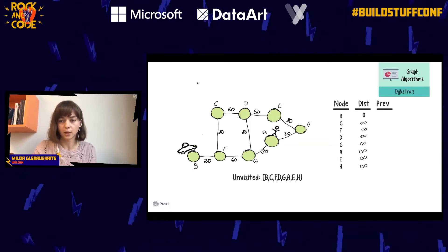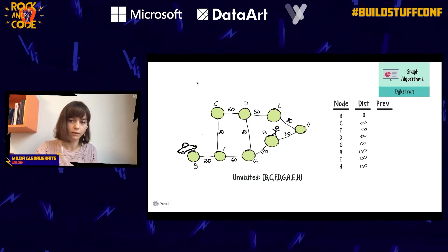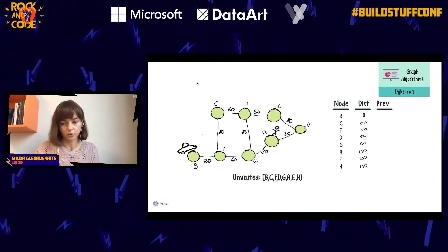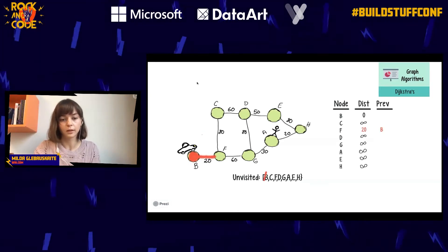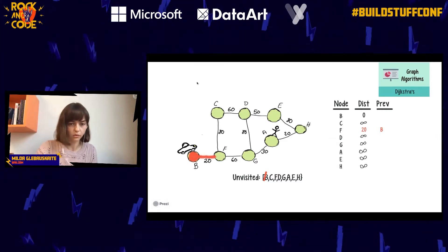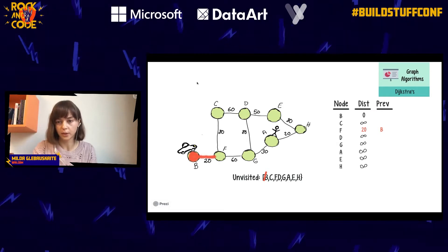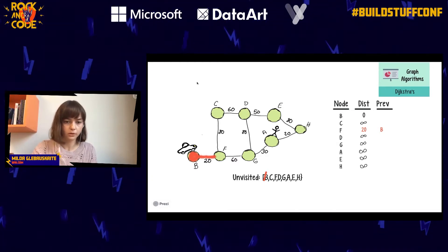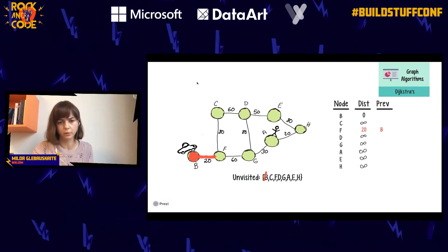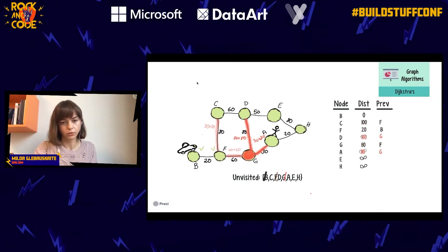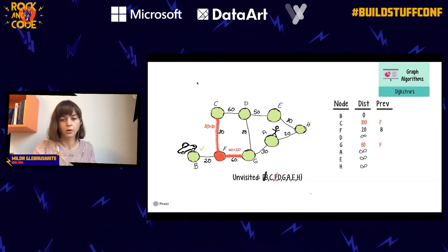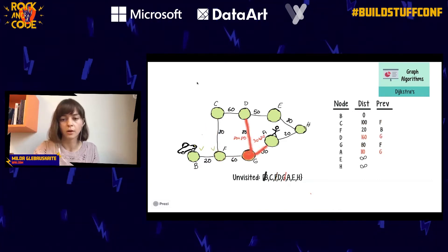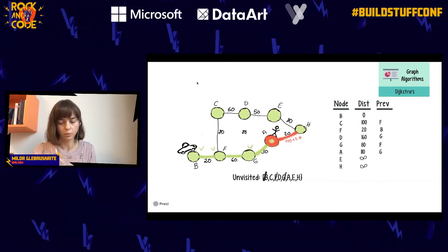How Dijkstra's algorithm works: you create a list of nodes that haven't been visited yet — an 'unvisited set.' You create a table of tentative distances to each node, set to zero for your starting node and infinity for all others. Then you iterate through every node, calculate the distance to its neighbors, compare to the value in the table, and update if the new value is less. You mark where you came from, remove the node from the unvisited set, and move to the node with the lowest tentative distance. You continue until you reach your finish node.